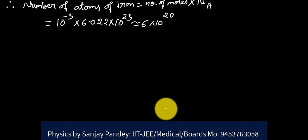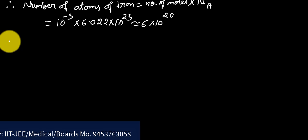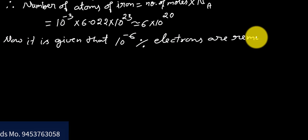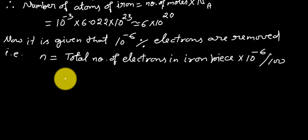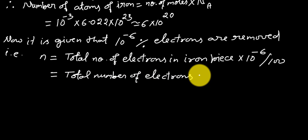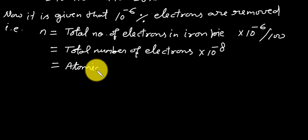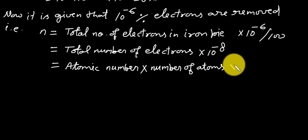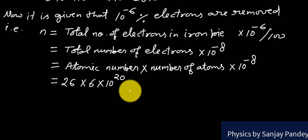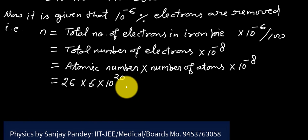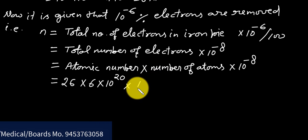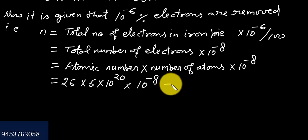The number of atoms of iron is equal to 6 × 10^20. It is given that 10^-6 percent electrons are removed = total number of electrons × 10^-6 × 10^-8. Total number of electrons will be equal to atomic number × number of atoms × 10^-8 = 26 × 6 × 10^20. As total number of atoms is 6 × 10^20 and number of electrons in one atom is 26 atomic number × 10^-8.